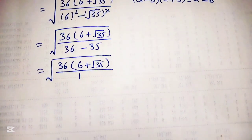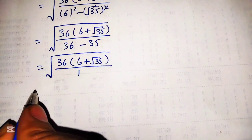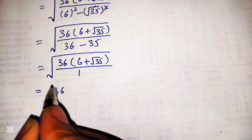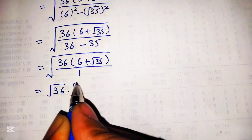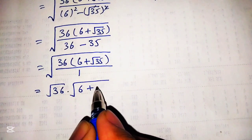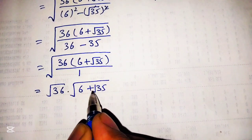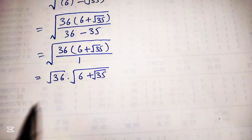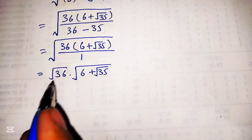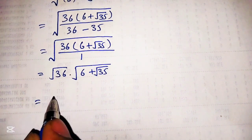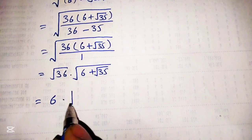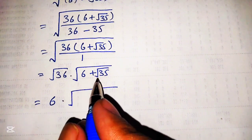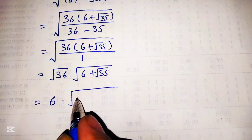Now we can rewrite this by separating: square root of 36 times square root of 6 plus square root of 35, over 1. The square root of 1 equals 1, so we write square root of 36 times 6 plus square root of 36 times square root of 35. We need to simplify this equation further.